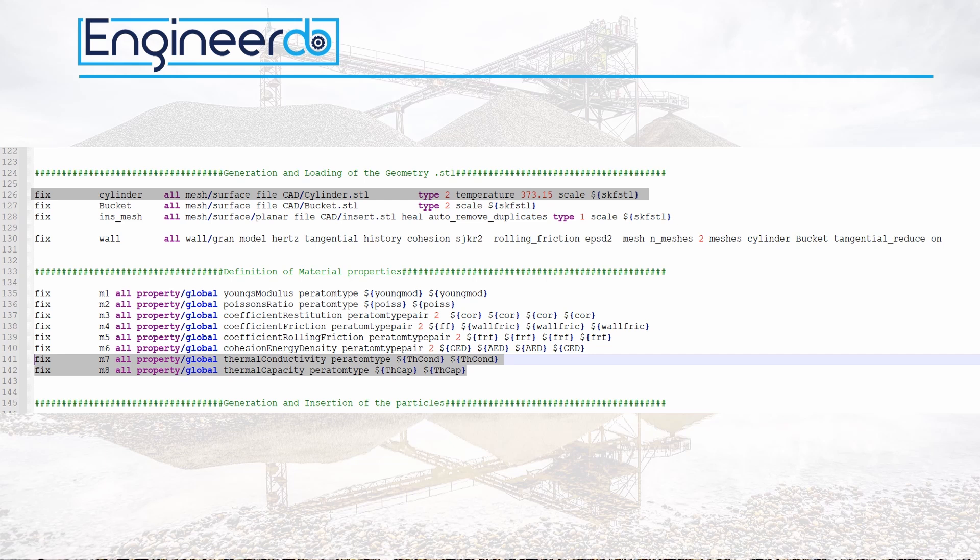In the lines 141 and 142 the variables defined above will be transferred to a property of the simulation. Note that the values must be given per atom type which means separately for every material type we have in the simulation.